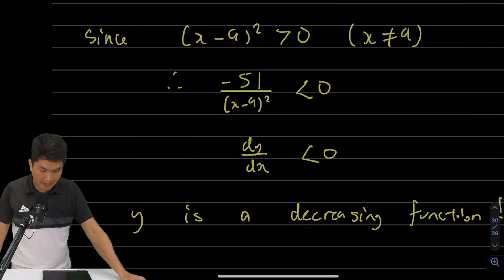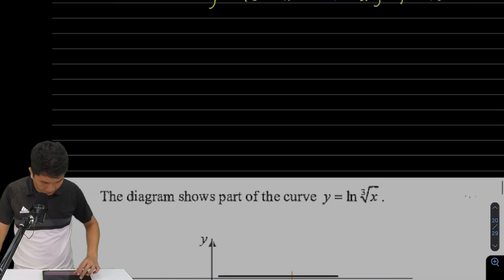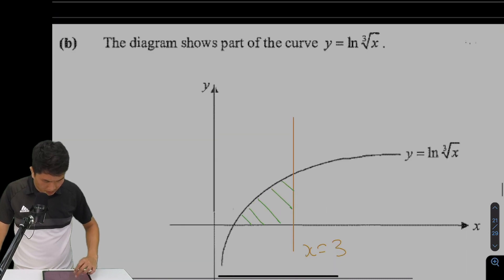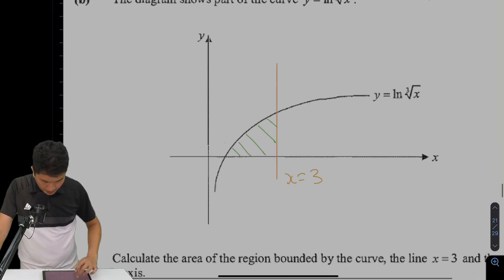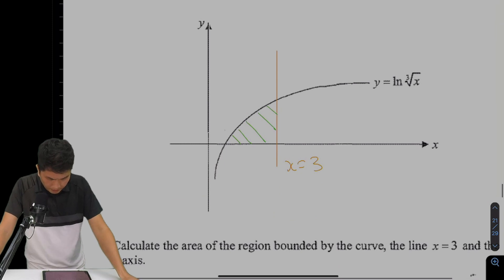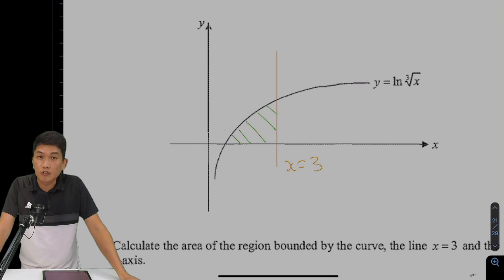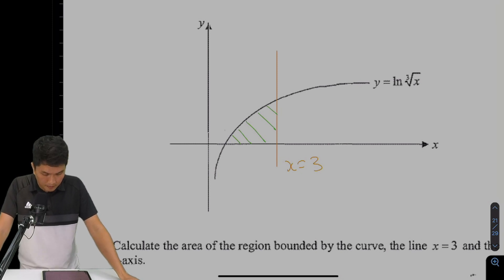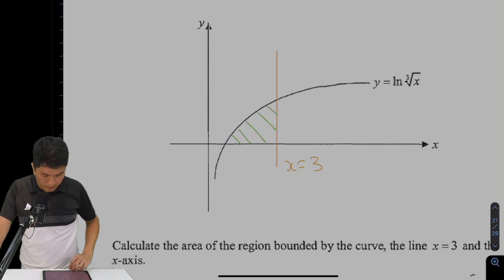Now let's look at question 8b. We have an integration question. For 8b, we are supposed to find the region bounded by the curve, the line x equals 3, and the x-axis. So that is the area in green. To find that area, we just need to integrate natural log of the cube root of x from 1 to 3.